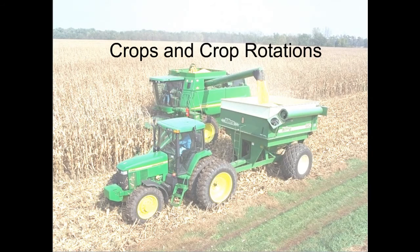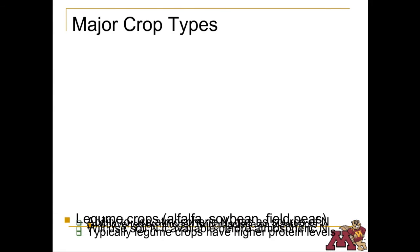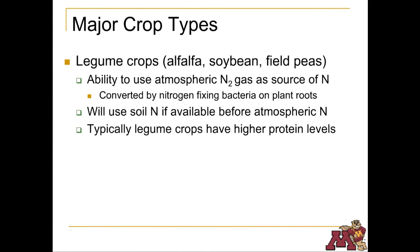Crops and crop rotations. The major legume crops grown in Minnesota include alfalfa, soybeans, and field peas. Legumes can take their needed nitrogen straight out of the air, through a process called nitrogen fixation.